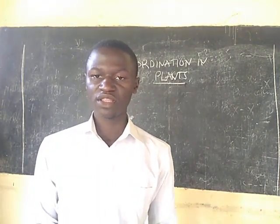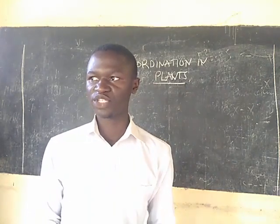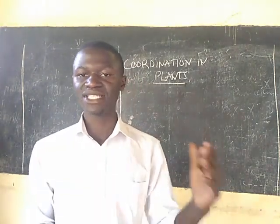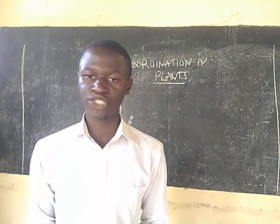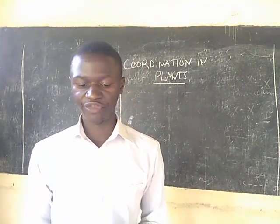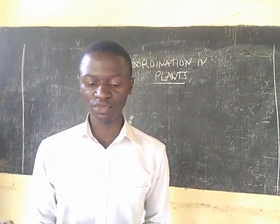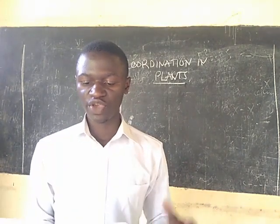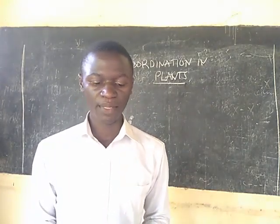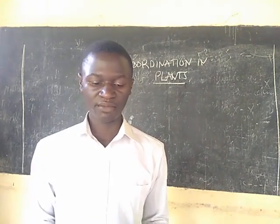Then you have cytoplasmic streaming, which means movement from one part of the cytoplasm to another — for example from cytoplasm to the cell membrane. Then transport by vascular tissues, meaning xylem and phloem tissues. Sometimes it is xylem, sometimes it is phloem, used to move hormones from one part of the plant. So the common types of movement used by plants are localized movement, cytoplasmic streaming, and vascular tissues.